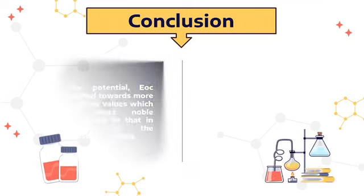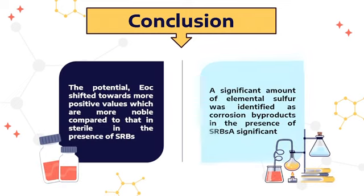In a nutshell, the open circuit potential measurements and the high amount of elemental sulfur detected proved that the presence of SRBs increases the corrosion potential of stainless steel.